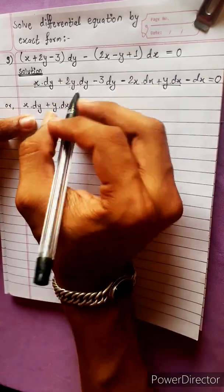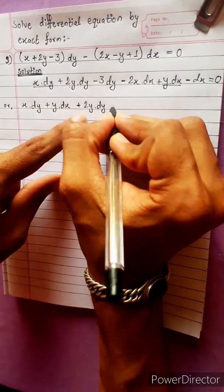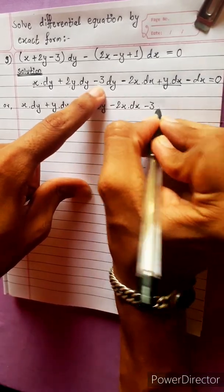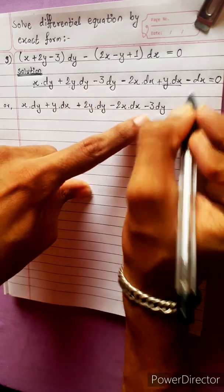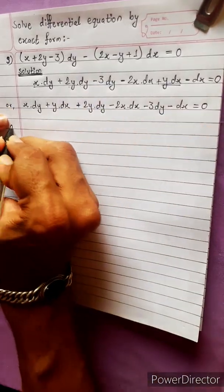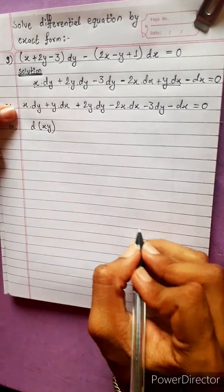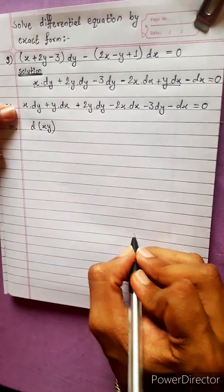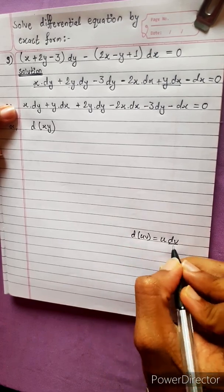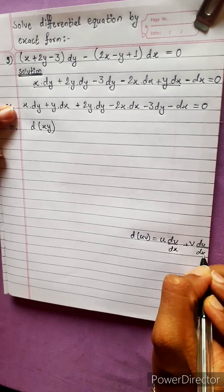If we multiply the equation and y dy equals 0, we use the formula: d(xy), which is the same as d(uv), which is u into dv/dx plus v du/dx.